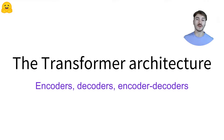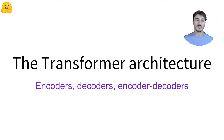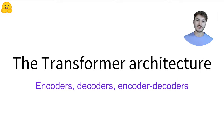Let's study the transformer architecture. This video is the introductory video to the encoders, decoders, and encoder-decoder series of videos. In this series, we'll try to understand what makes a transformer network, and we'll try to explain it in simple, high-level terms. No advanced understanding of neural networks is necessary, but an understanding of basic vectors and tensors may help.